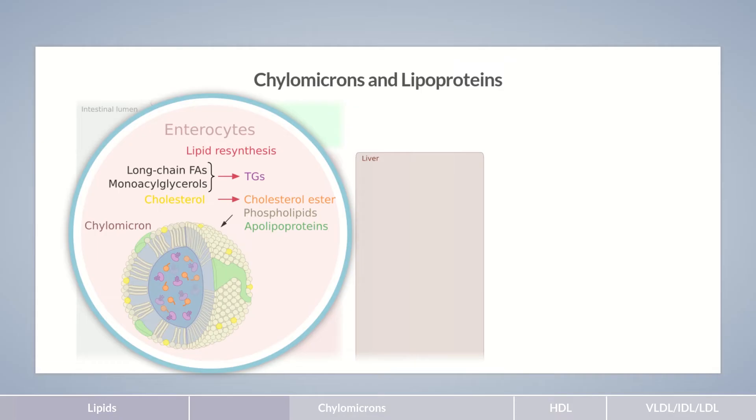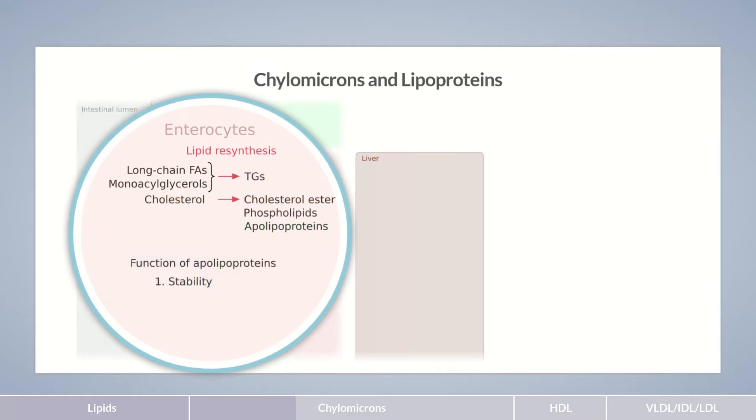Apolipoproteins comprise approximately 1% of the chylomicron content. As part of these transport complexes, apolipoproteins have several important functions. In particular, they stabilize lipoproteins through their amphiphilic properties, that is, their hydrophilic and lipophilic portions. In addition, they activate various enzymes responsible for modifying lipoproteins. Also, they serve as ligands for binding to lipoprotein receptors.